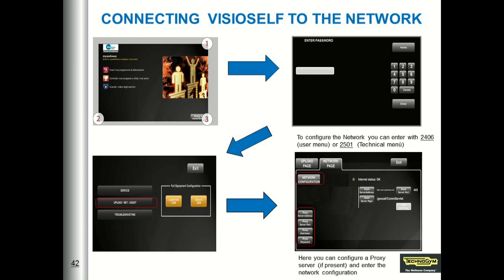In this presentation we are seeing how to connect VisioSelf to the network. The first thing to do is entering into the user or technical menu. To do that, you have to press the top right corner, then the left bottom corner, and then the bottom right corner of the VisioSelf when it is in the standby page. The VisioSelf will ask you for a password. We have two passwords: one for the customer — the owner of the facility — which is 2406, and another menu accessible using the password 2501, used by our technicians and giving access to more settings.